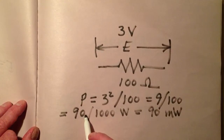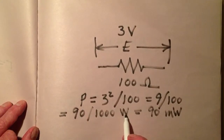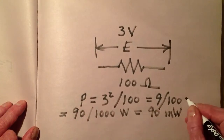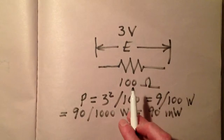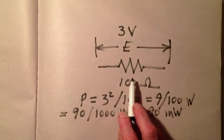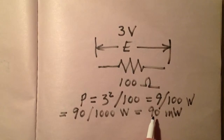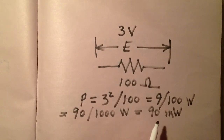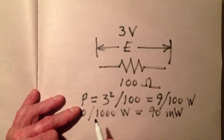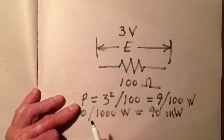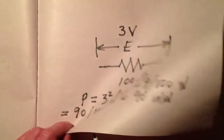We can change that to 90 over 1,000 watts, which is 90 milliwatts. Now, most resistors in common practice are rated at one quarter of a watt — that's 250 milliwatts — or one half a watt, that is 500 milliwatts. So we're safe with this. If we put 3 volts across a 100 ohm, quarter-watt resistor, we're all right.